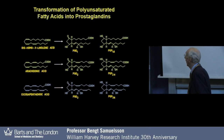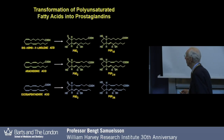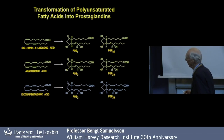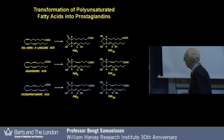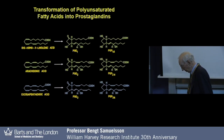Here are the structures of the E1 series, E2, E3. It was not until we had the structure of PGE3, where all the double bonds were there in the right place, that we actually got the idea that the polyunsaturated fatty acids could be precursors of the prostaglandins.